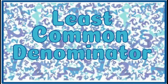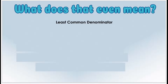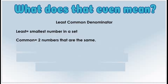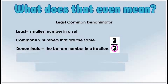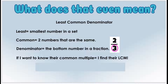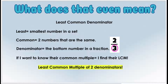Today we're going to talk about the least common denominator. We've already talked about the least common multiple, so let's see if they have anything in common. Least means the smallest number in a set, common means two numbers that are the same, and denominators are the bottom number in a fraction. So the least common multiple of two denominators is the least common denominator.